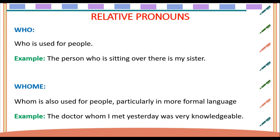First of all, 'who' — who is used for people. For example: 'The person who is sitting over there is my sister.' In this example, the relative pronoun 'who' is providing some extra information about the noun 'person.'